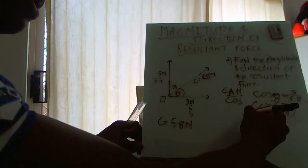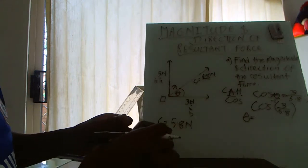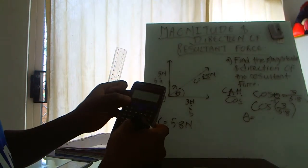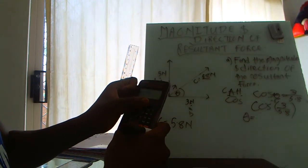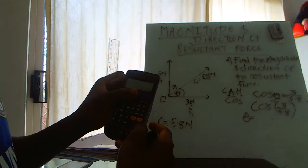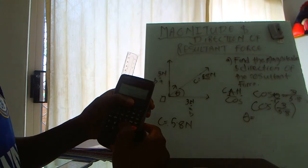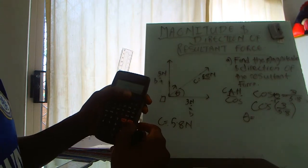And this will give us the angle theta. Cos inverse of 3 over 5.8 gives us 58.85.